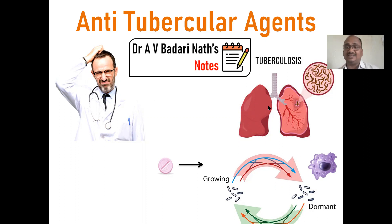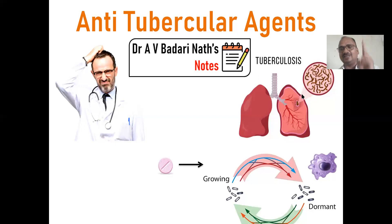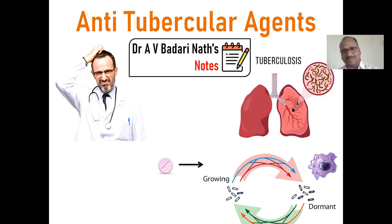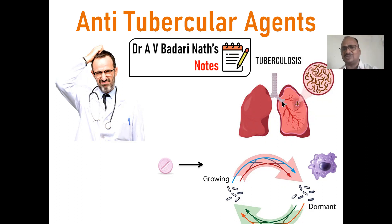Tuberculosis is caused by the organism Mycobacterium tuberculosis, or Mycobacterium tuberculae. This organism mainly relates to the lungs — lungs infection — but beyond the lungs also, it attaches to the intestine and various parts of the body, not only the lungs.